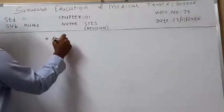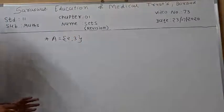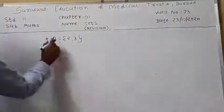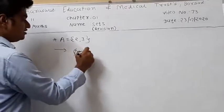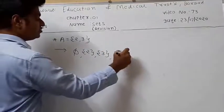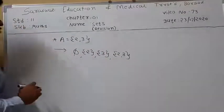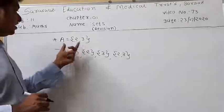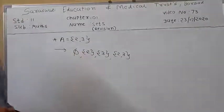Suppose A equals {2, 3} — two elements present. Find all the subsets of this set. First, the empty set; then singleton sets {2} and {3}; then the two-element set {2, 3}, which is the set A itself. So all subsets are listed in this order: empty set, {2}, {3}, and {2, 3}.